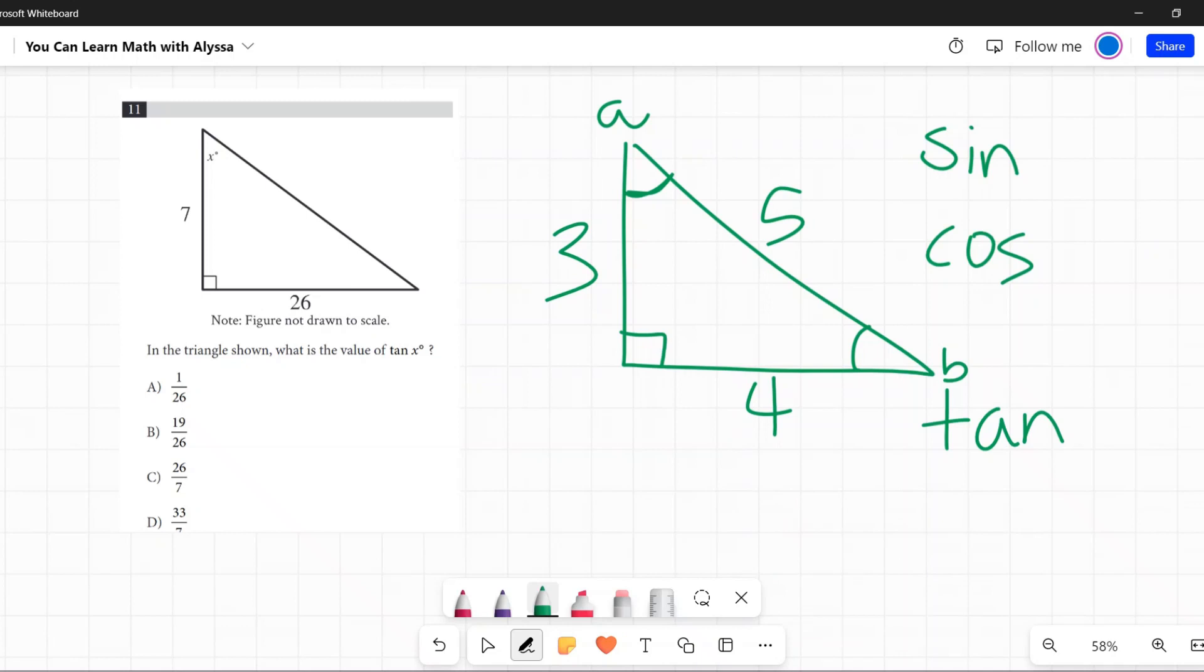If I am looking at, actually I'm going to erase that B, let's just look at angle A. If I want to know the sine of angle A, it is going to be the opposite side divided by the hypotenuse. So the sine would be 4 over 5.